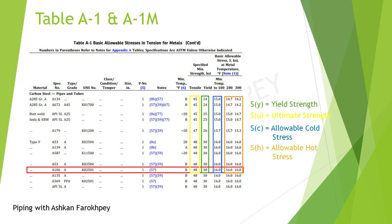You may ask what is the maximum temperature of this range. This can also be found in Table A1 for each material. By scrolling down Table A1, you can find the highest temperature that each material can be used, which can be up to 1500 degrees Fahrenheit in some cases. Obviously, when the temperature is raised, the allowable hot stress is reduced. The next two columns show the exact quantities of yield strength in the green box and UTS in the yellow box in KSI.